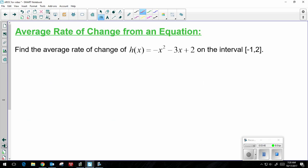Lastly, let's look at average rate of change from an equation. Find the average rate of change of h(x) equals negative x squared minus 3x plus 2 on the interval negative 1 comma 2.